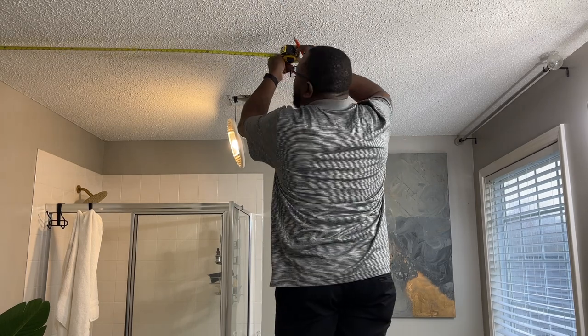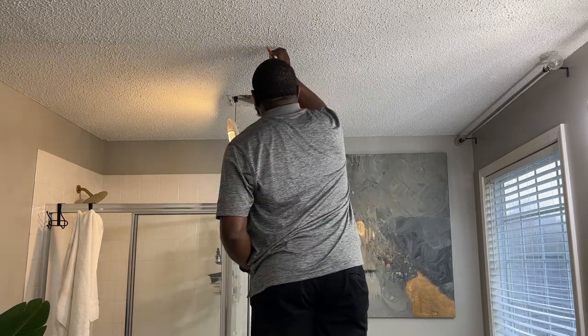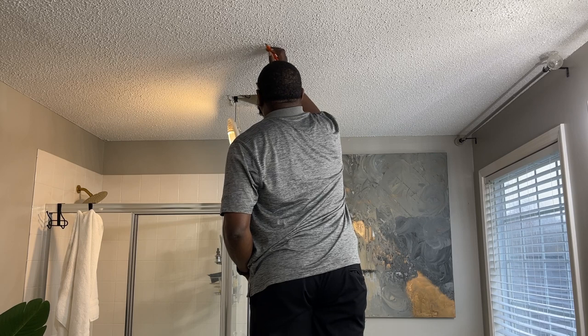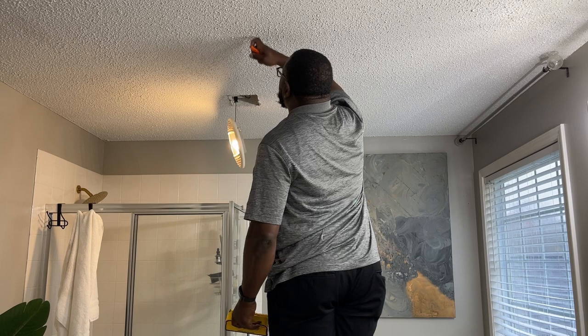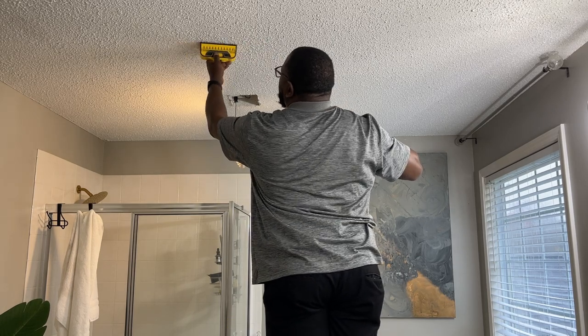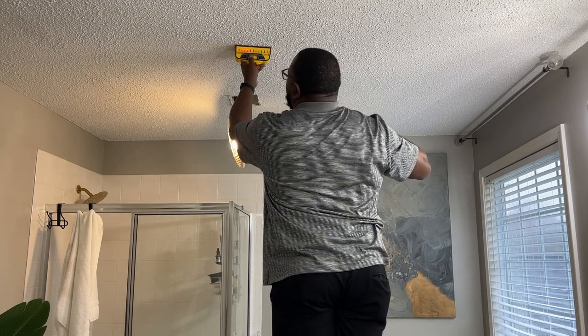I first had to find out where the center of the room was and marked that on the ceiling. I'm using my stud finder to make sure that where I want the light installed in the ceiling there's no joist prohibiting me from installing the box.